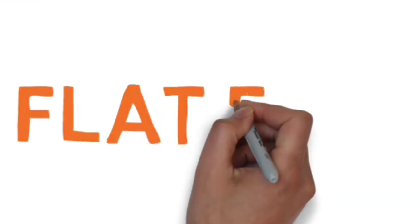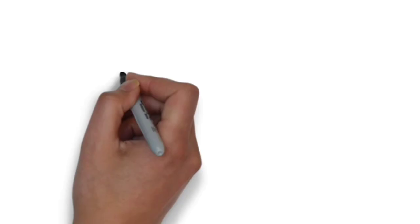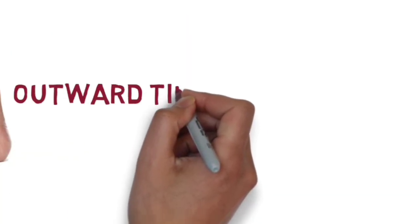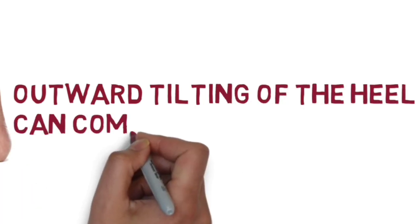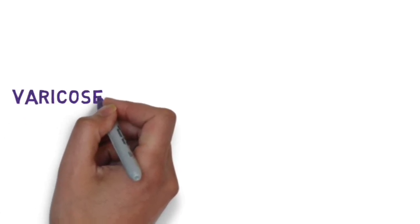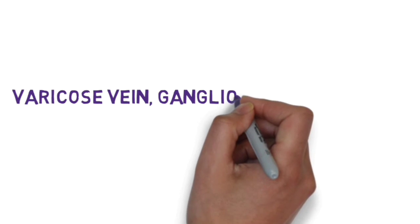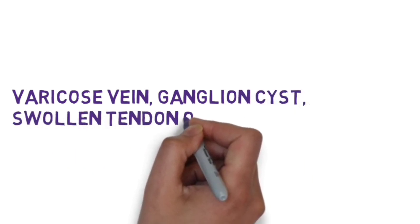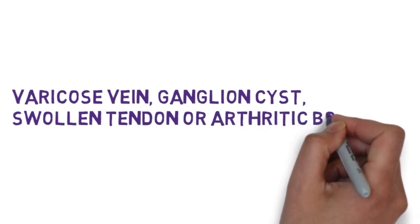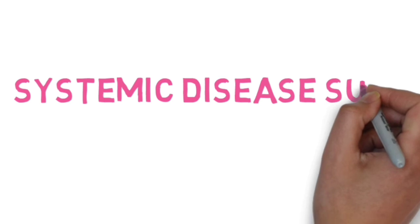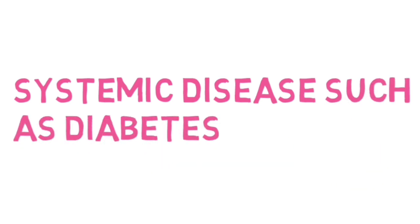The most important cause of tarsal tunnel syndrome is flat foot due to fallen arches, where the heel tilts outward causing compression of the nerve. Certain space-occupying lesions such as varicose veins, ganglion cysts, swollen tendons, and arthritic bone spurs can also increase compression over the nerve. Systemic disorders such as diabetes and arthritis can increase inflammation, further compressing the nerve.